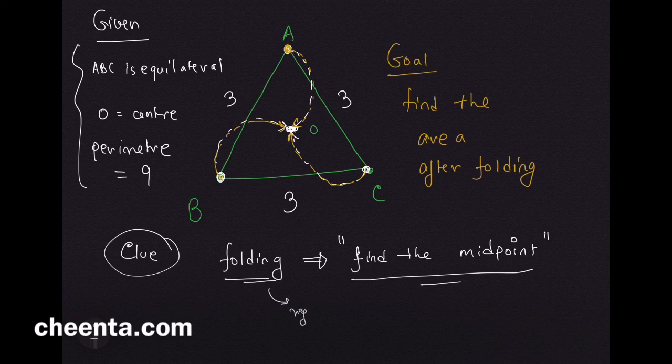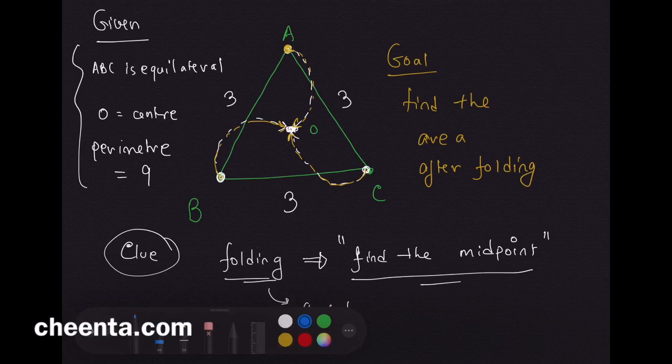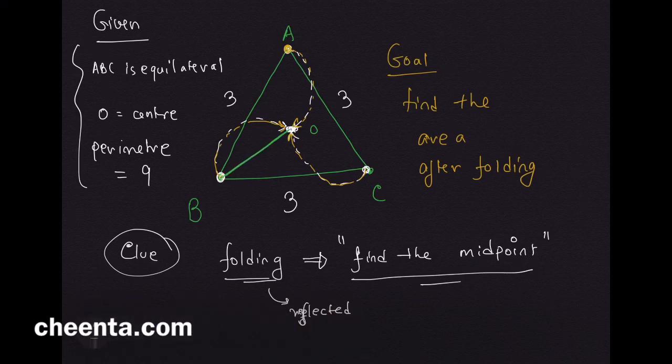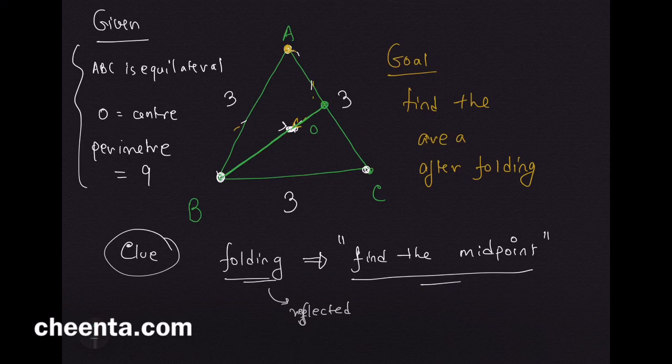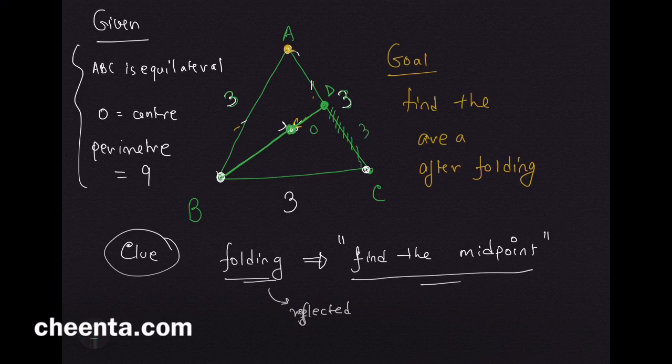What does it mean in this picture? Let's join BO. If we produce BO, it hits the midpoint of AC. Let's call that point D. We know that the triangle is 3, 3, 3 equilateral, so this little part is 3/2.